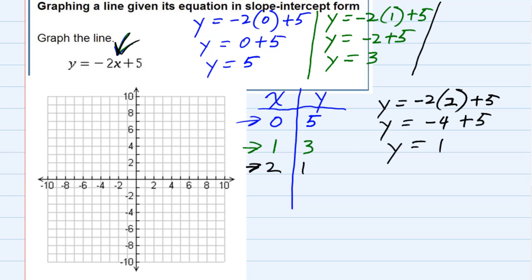Now each one of these is a coordinate pair. The first one, 0, 5. If I plot that, my x value is 0, so starting at the origin left and right, I don't move at all. But then I go up to 5. This is the point 0, 5.